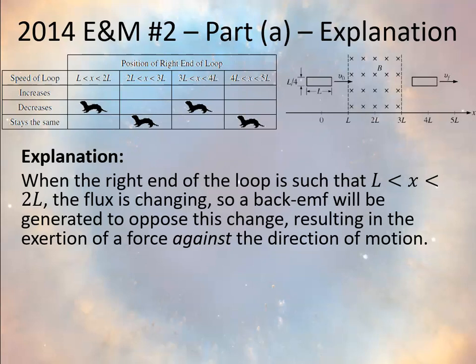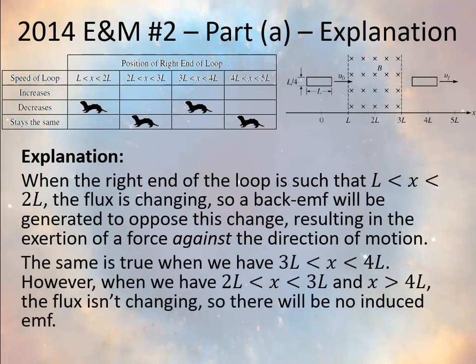The same is true between 4L and 5L — no change in magnetic flux. However, between 3L and 4L, you have a decreasing magnetic flux into the page. Nature opposes this change, generating an induced clockwise current that increases the magnetic flux into the page to counteract the decrease caused by the loop's motion. When you have a counterclockwise current as the loop enters the field, the right part of the loop has a current going upward.